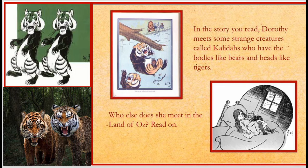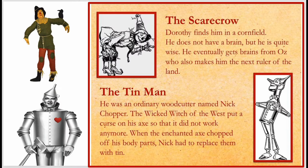The next character is the Scarecrow. Dorothy finds him in a cornfield. He does not have a brain but he is quite wise. He eventually gets a brain from Oz, who also makes him the next ruler of the land — a happy ending for him. He already uses wisdom whenever he faces problems, but he believes he doesn't have a brain because he is made of straw.